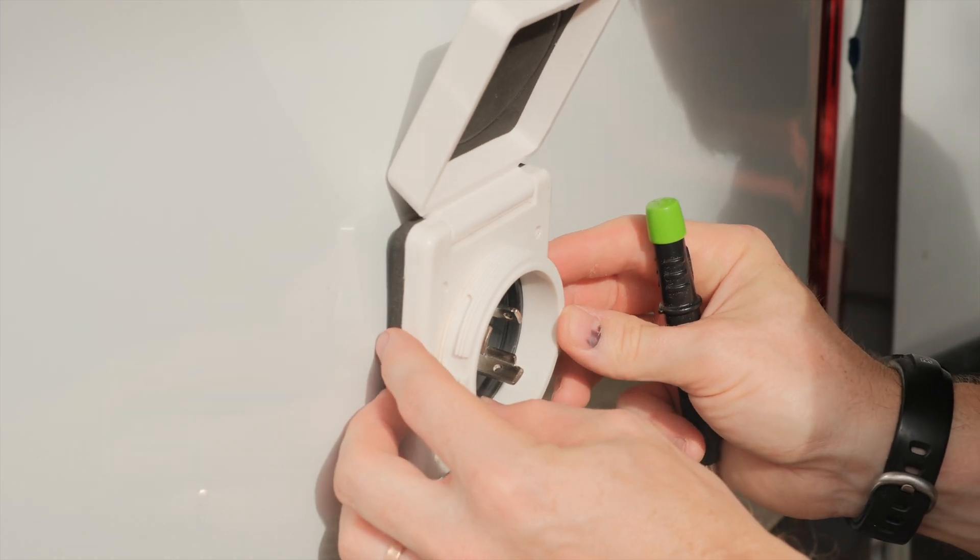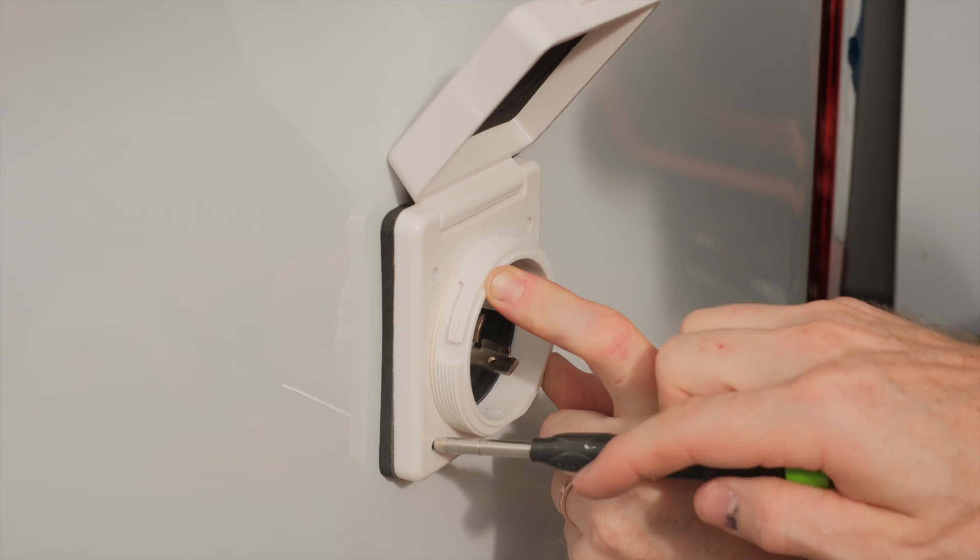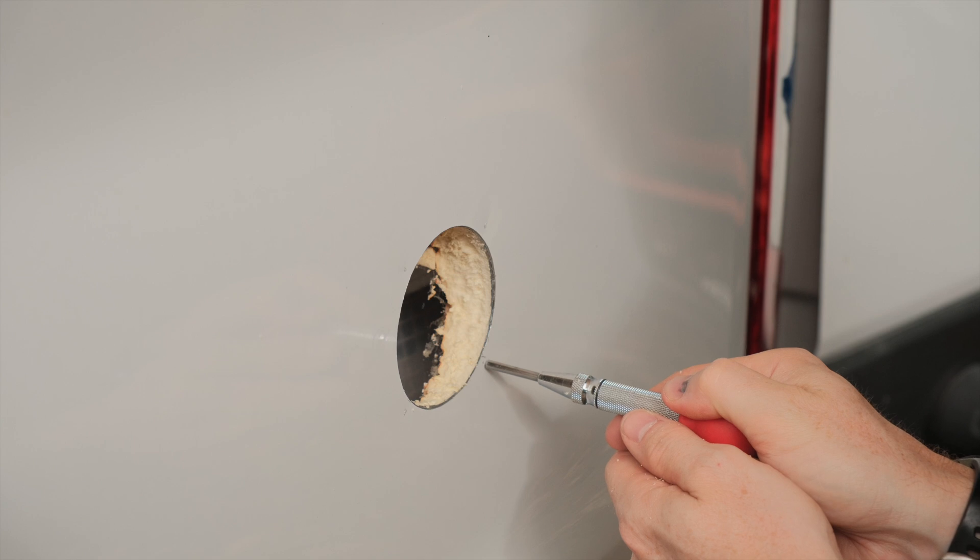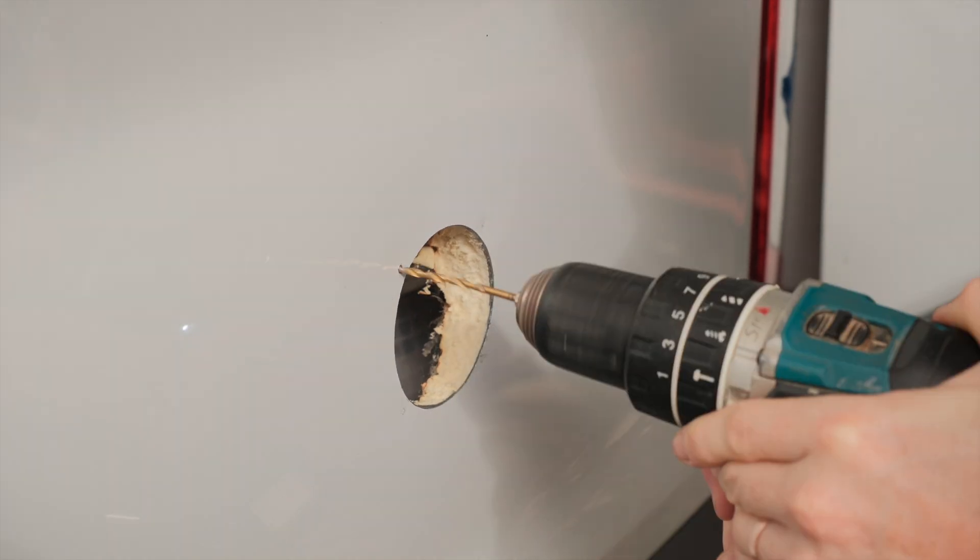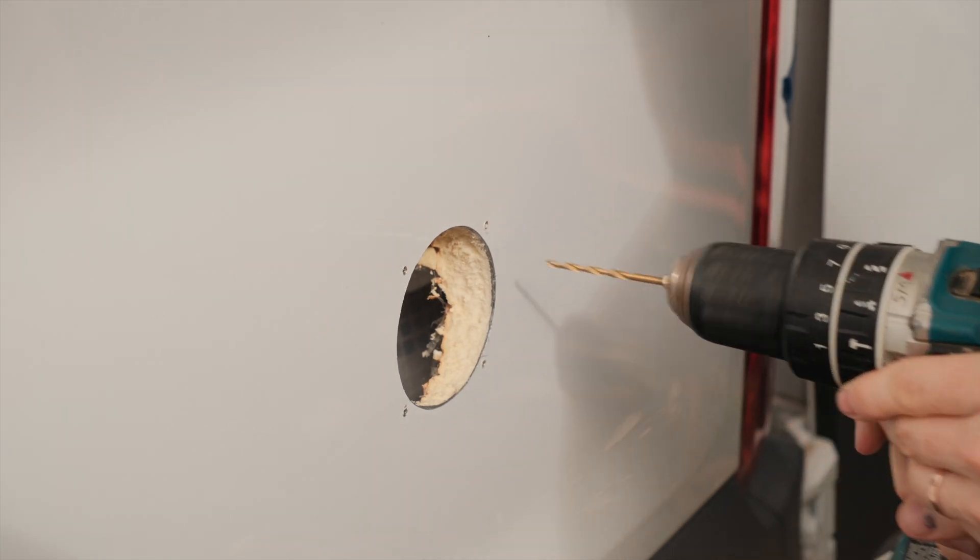Once the hole was cut, I test fit the power inlet and marked the screw hole locations with a long pencil. I then used a spring-loaded center punch to make a divot so the drill bit won't slide as it gets started, and then I drilled out pilot holes for the screws. Make sure you use a drill bit smaller than the threads of the screws you mount it with.